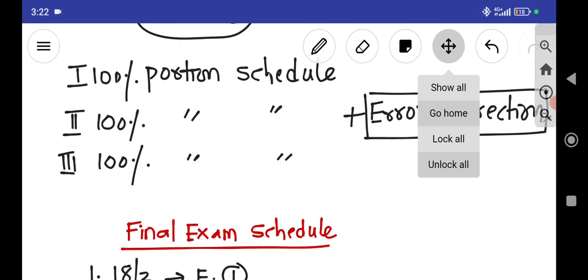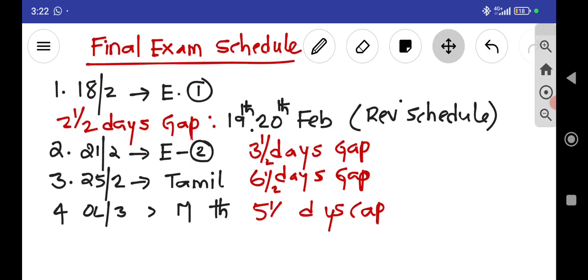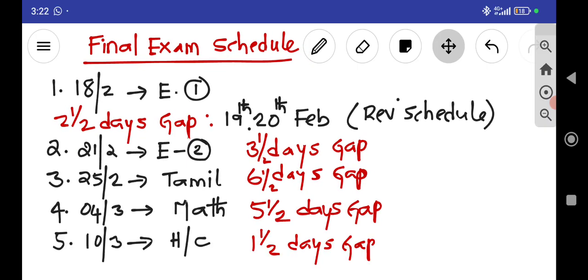Now the same thing you have to follow for first 100% portions, second 100%, third 100%, and again you have to follow the error correction. Now if you come to the final exam schedule, you can understand that in between you are having gap that we have to utilize.